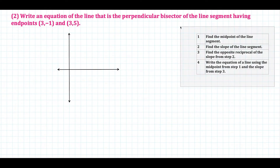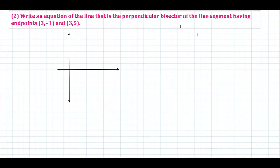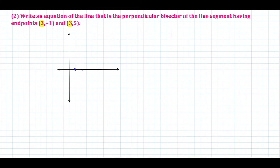For some examples, we need to think outside the box. In this second example, the two points have the same x-coordinate — (3, -1) and (3, 5). Anytime two points share an x-coordinate or a y-coordinate, you'll have a vertical or horizontal line. So this line segment is vertical.